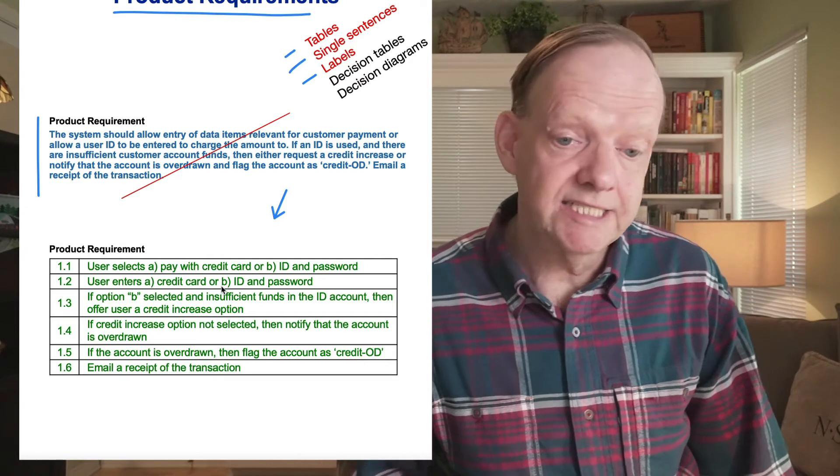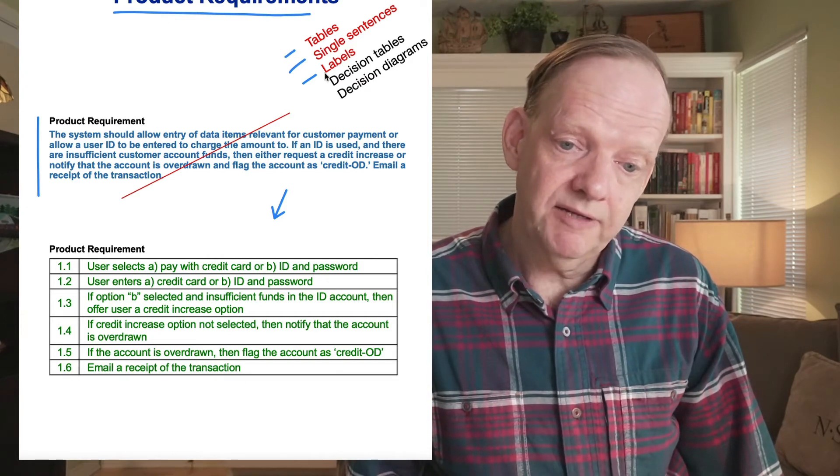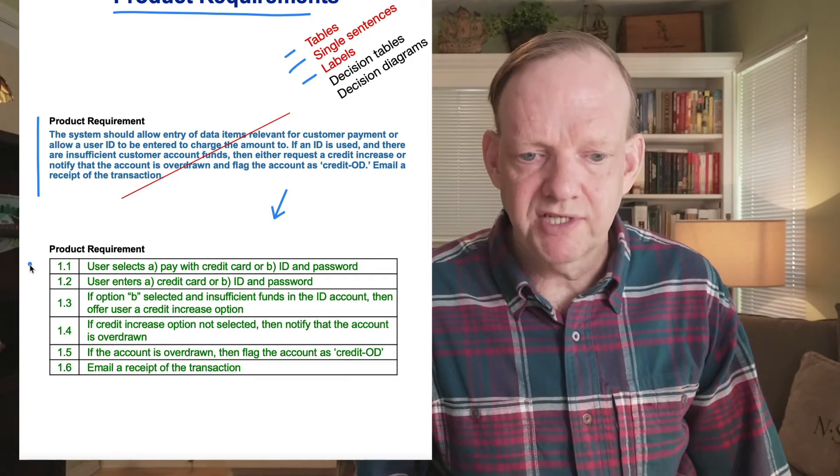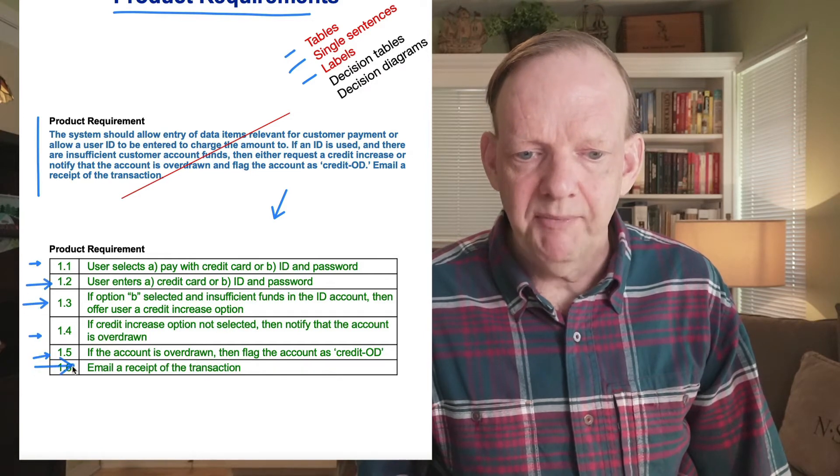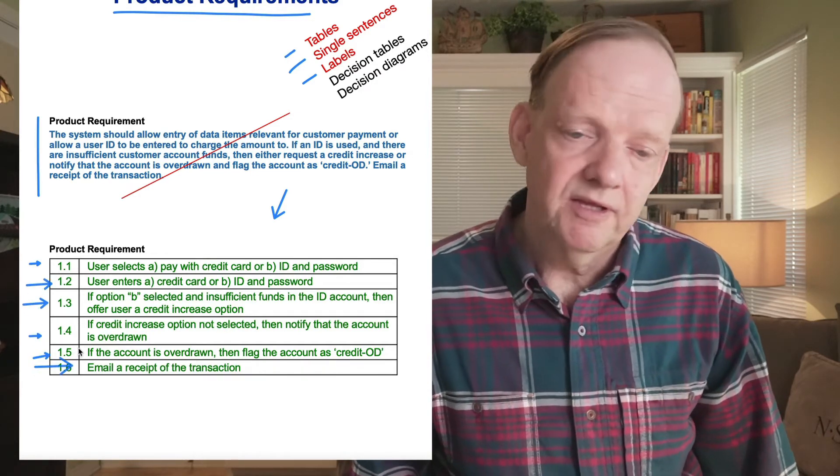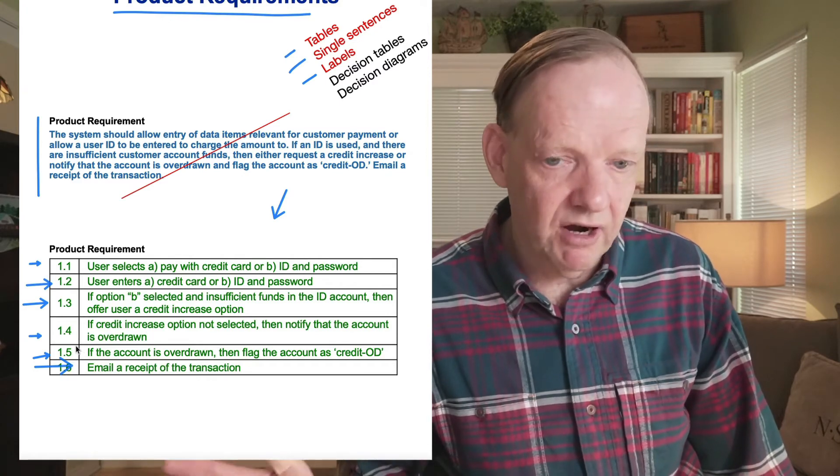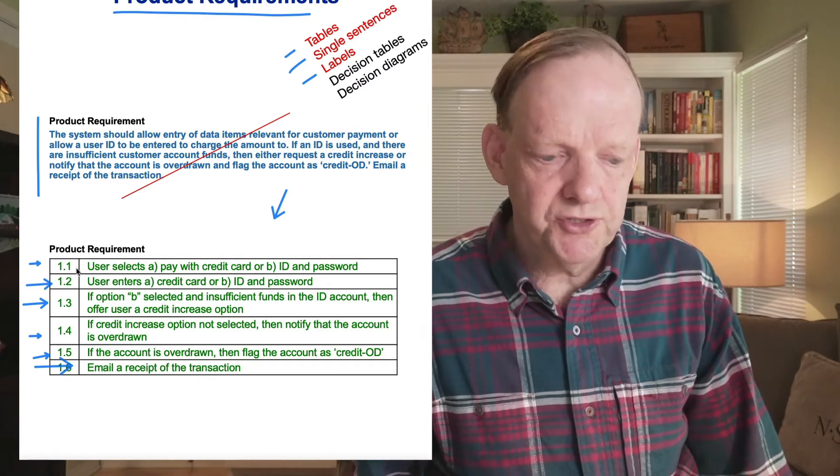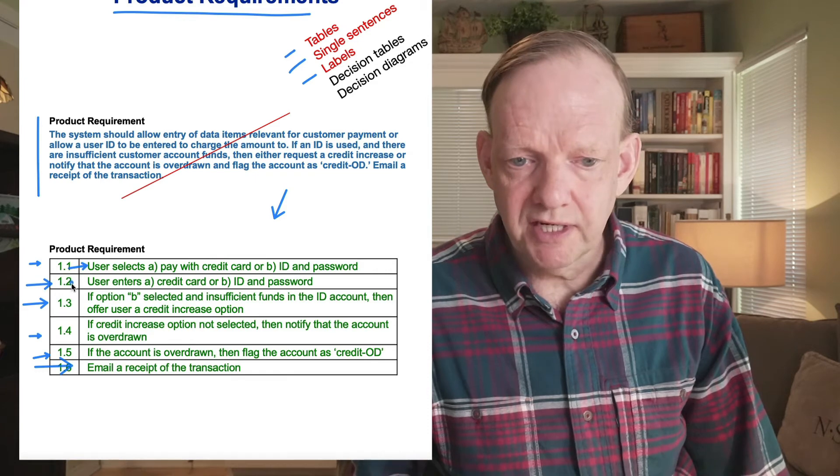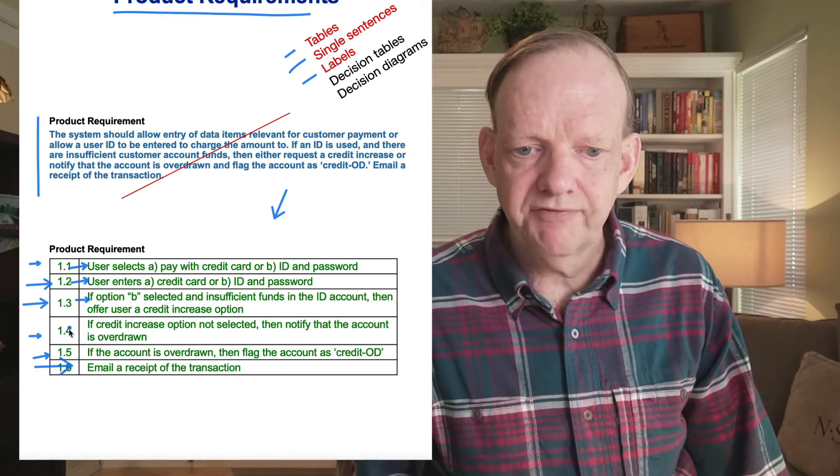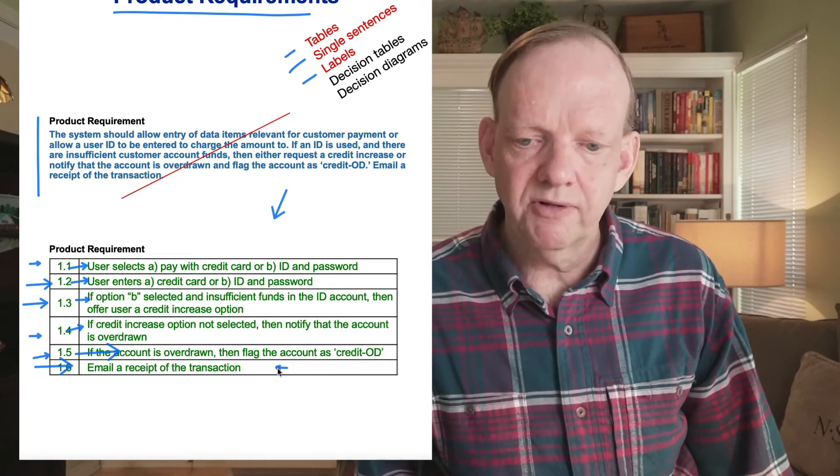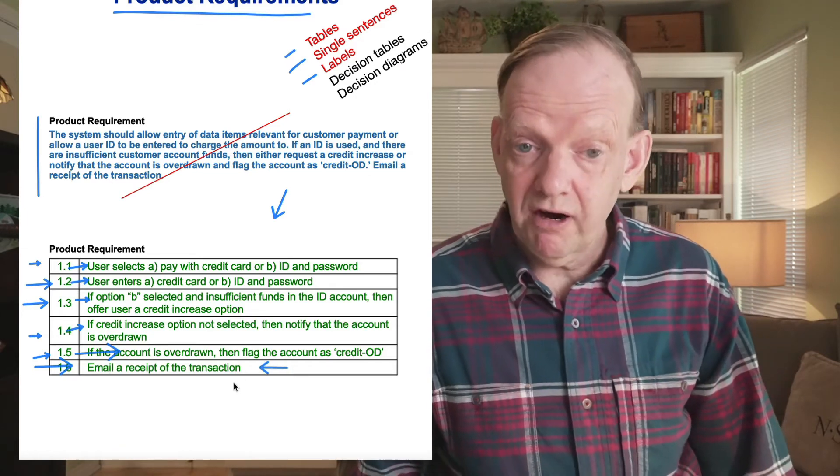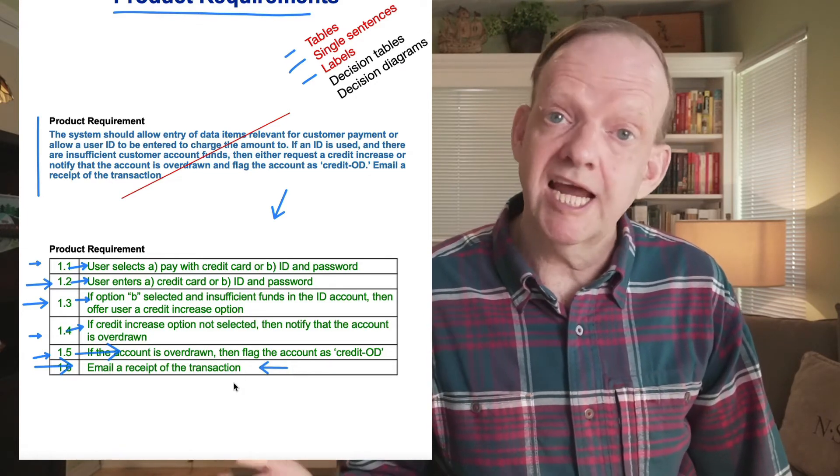Firstly, our table idea, single sentence and labeling. Now we've figured out there are six requirements by looking at the paragraph, and we can figure out which ones are if-then, and which ones are just going to do them regardless. So the first two are what the user does, and we have three if conditions we make in parallel, and then a final activity that occurs regardless.